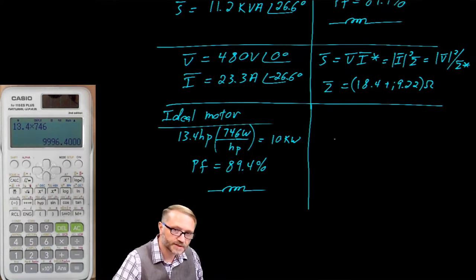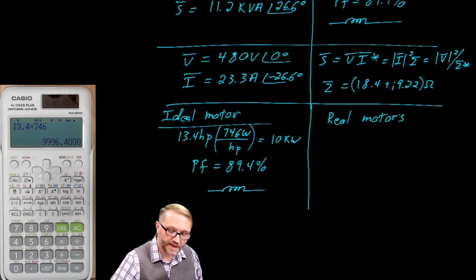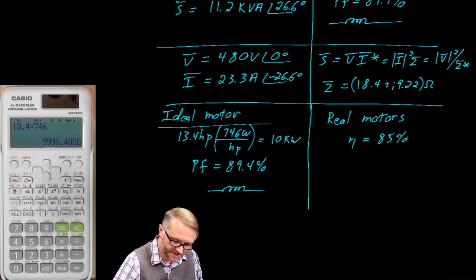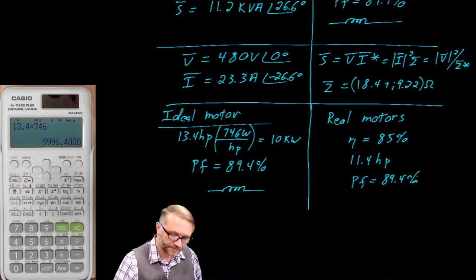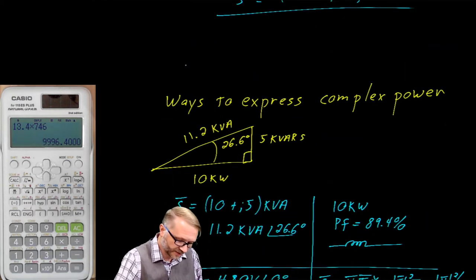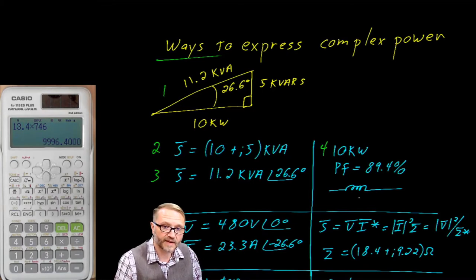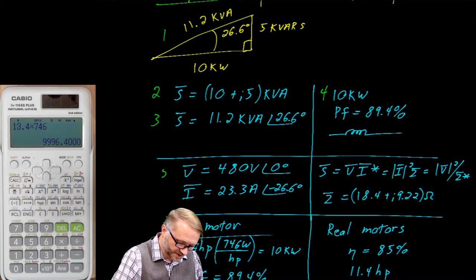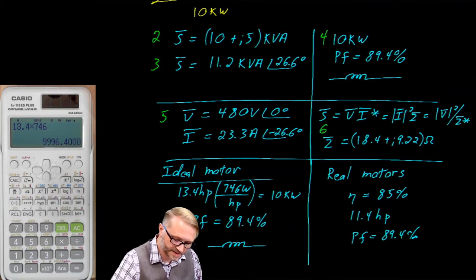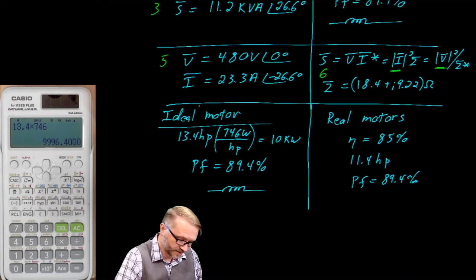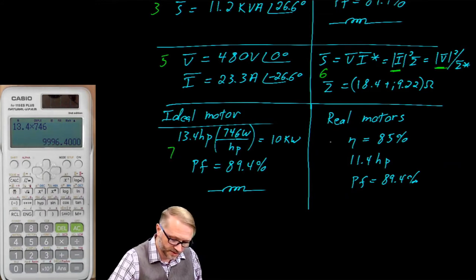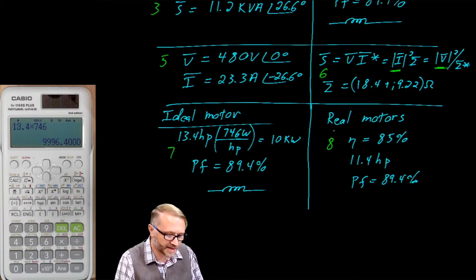In the near future, we're going to talk about real-world motors and efficiency. For example, if the efficiency equals 85% and the motor was 11.4 horsepower at a power factor of 89.4%, we have enough information to calculate complex power. Counting all the ways: power triangle, rectangular form, polar form, real power plus power factor, voltage and current, impedance with voltage or current, ideal motor, and real-world motor — there are at least eight different ways to express complex power.